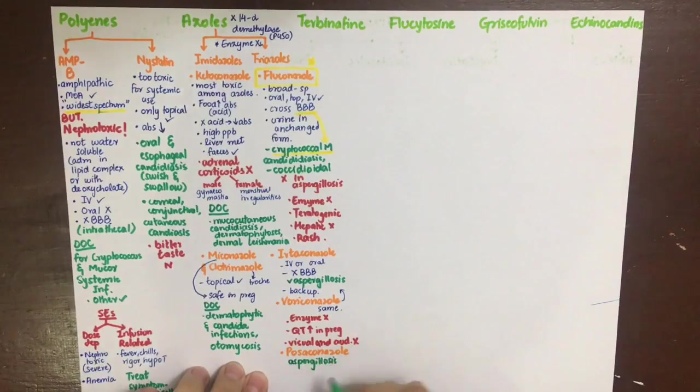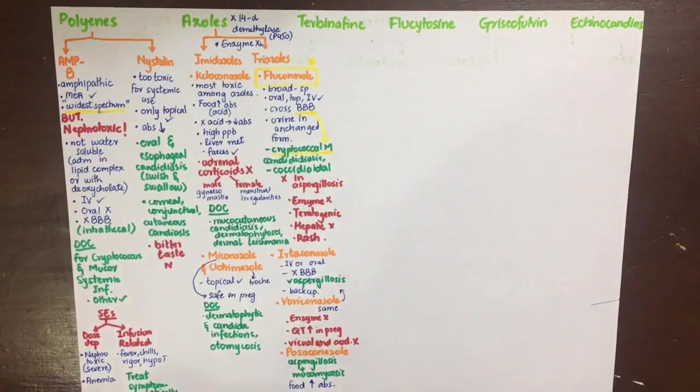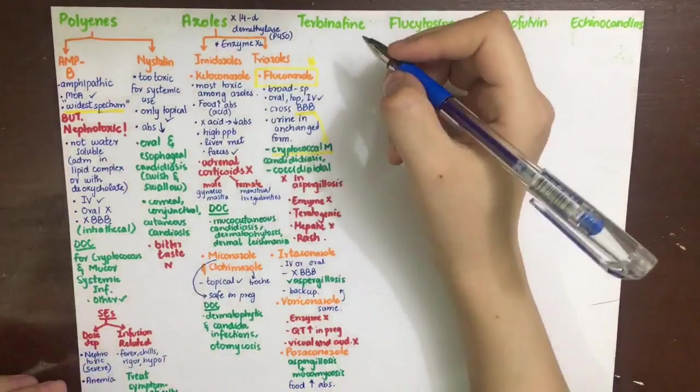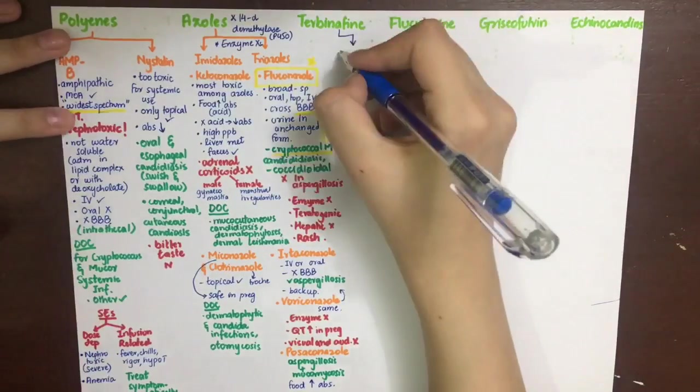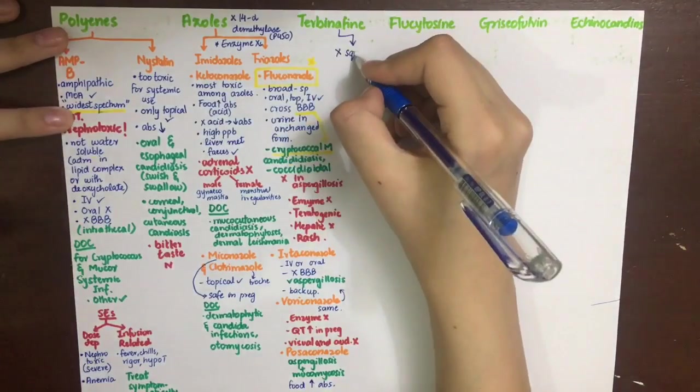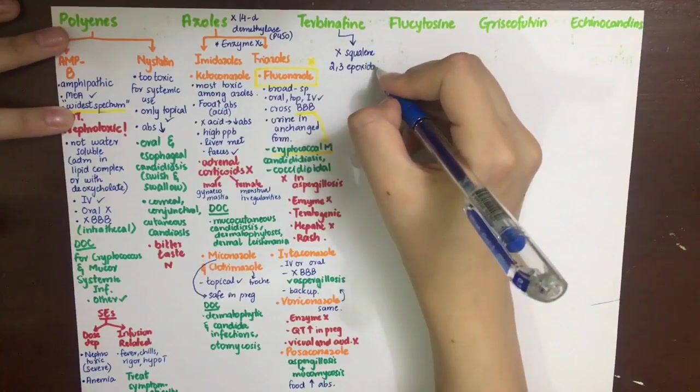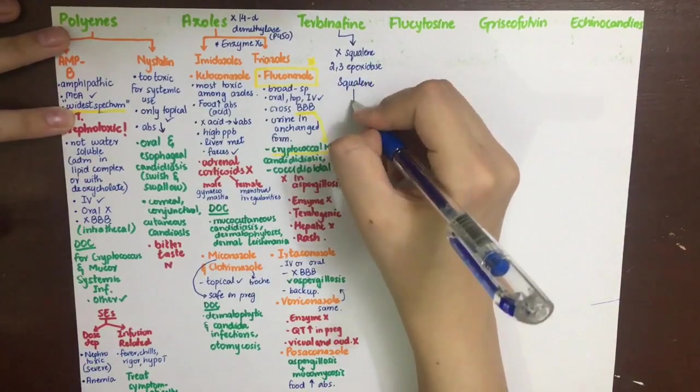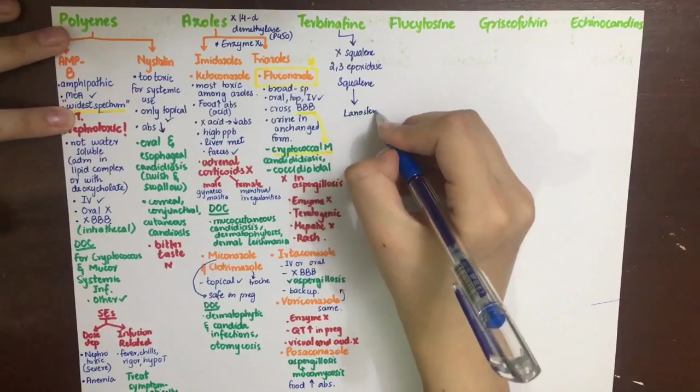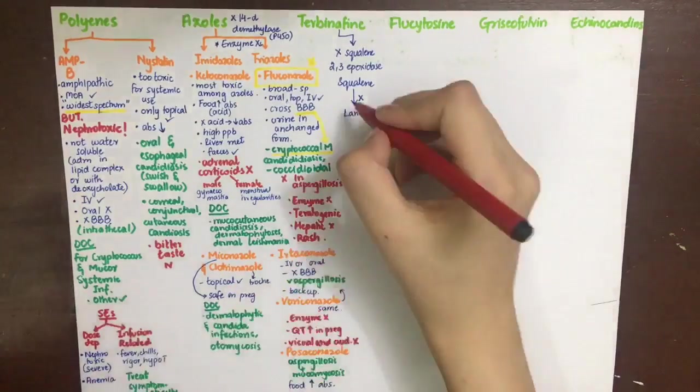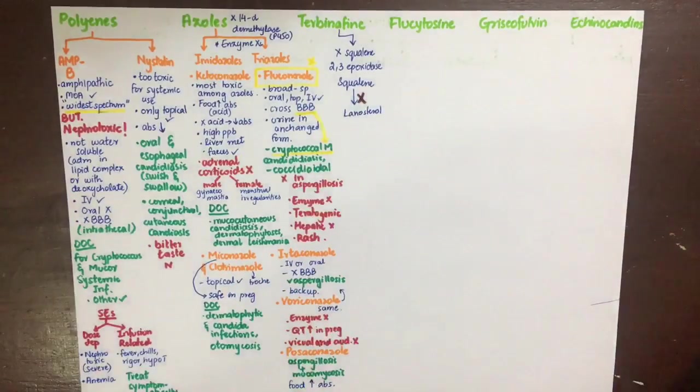The next drug is terbinafine. This will also cause inhibition of ergosterol synthesis by inhibiting the enzyme squalene 2,3-epoxidase, which catalyzes the second-last step in ergosterol synthesis, converting squalene into lanosterol. This step will be inhibited by this drug.